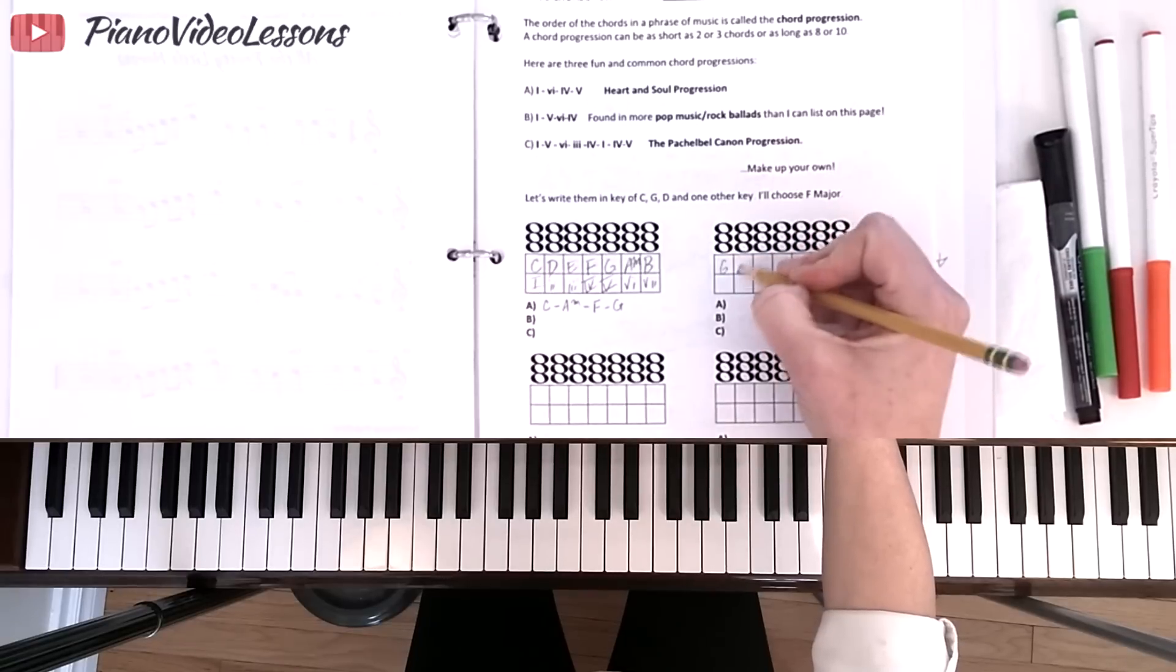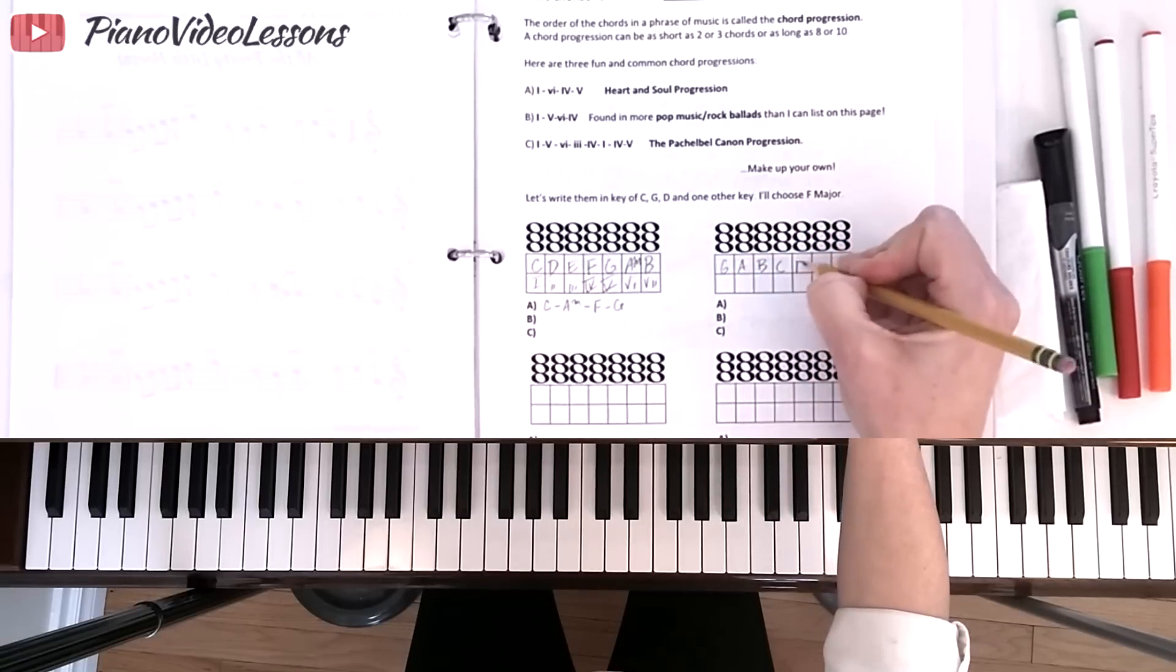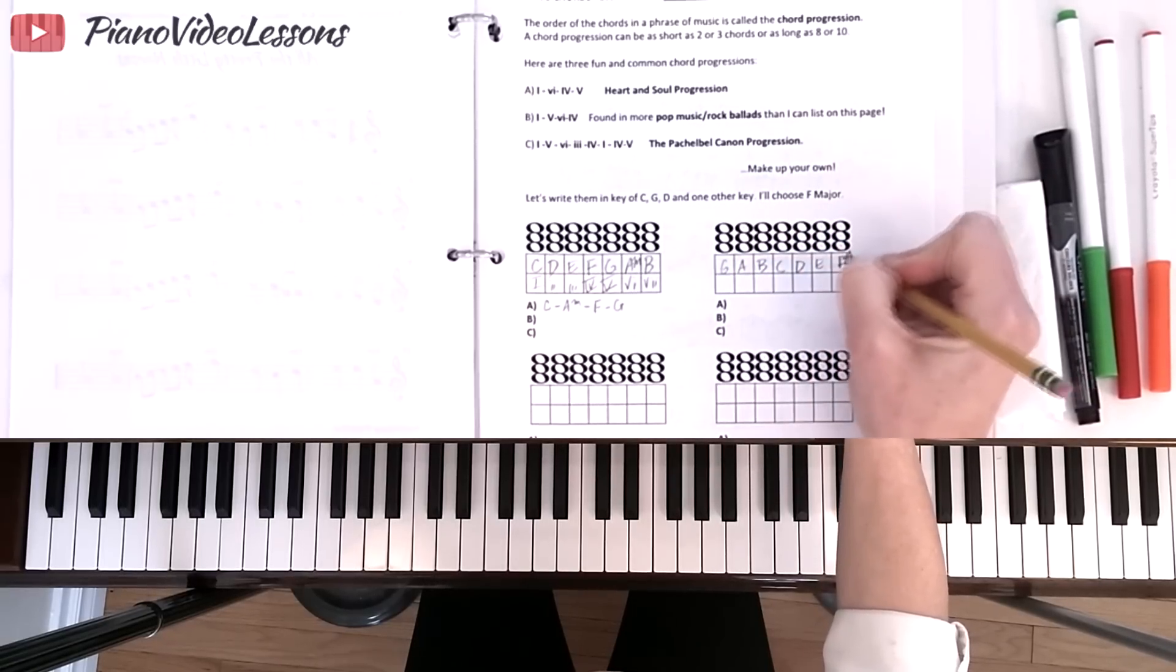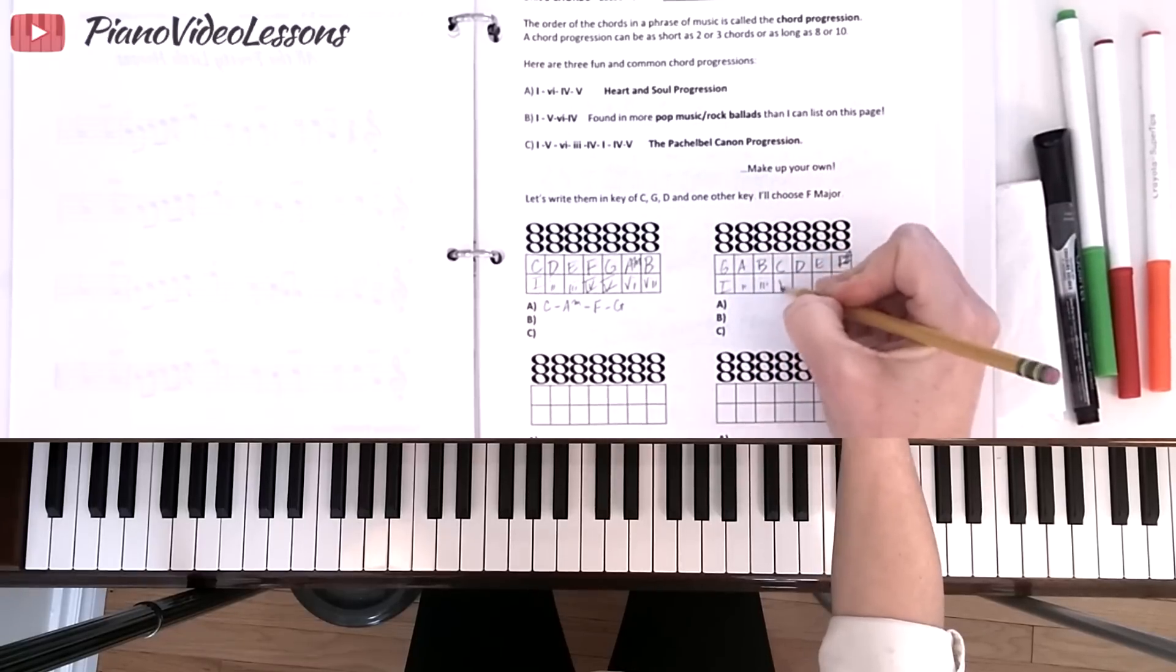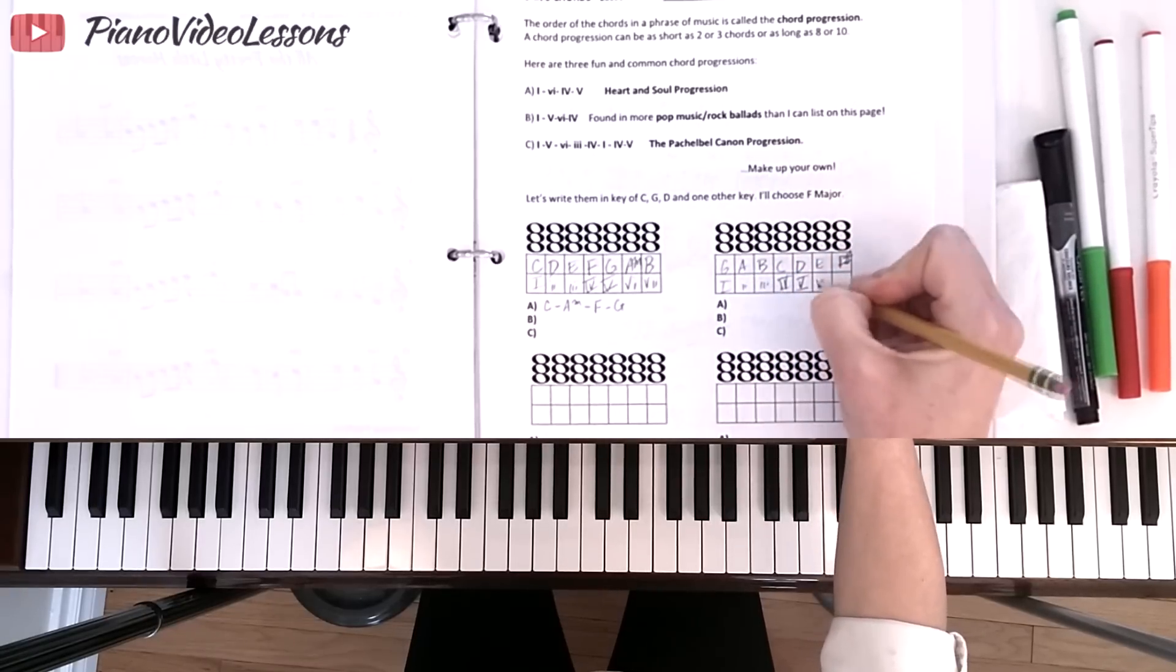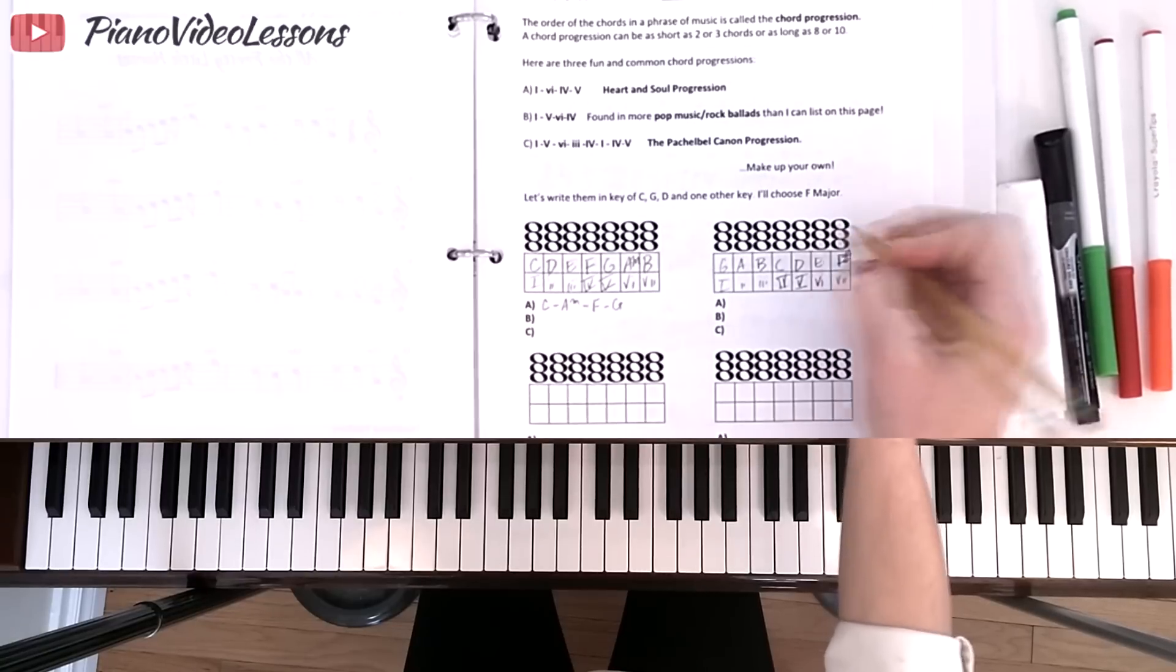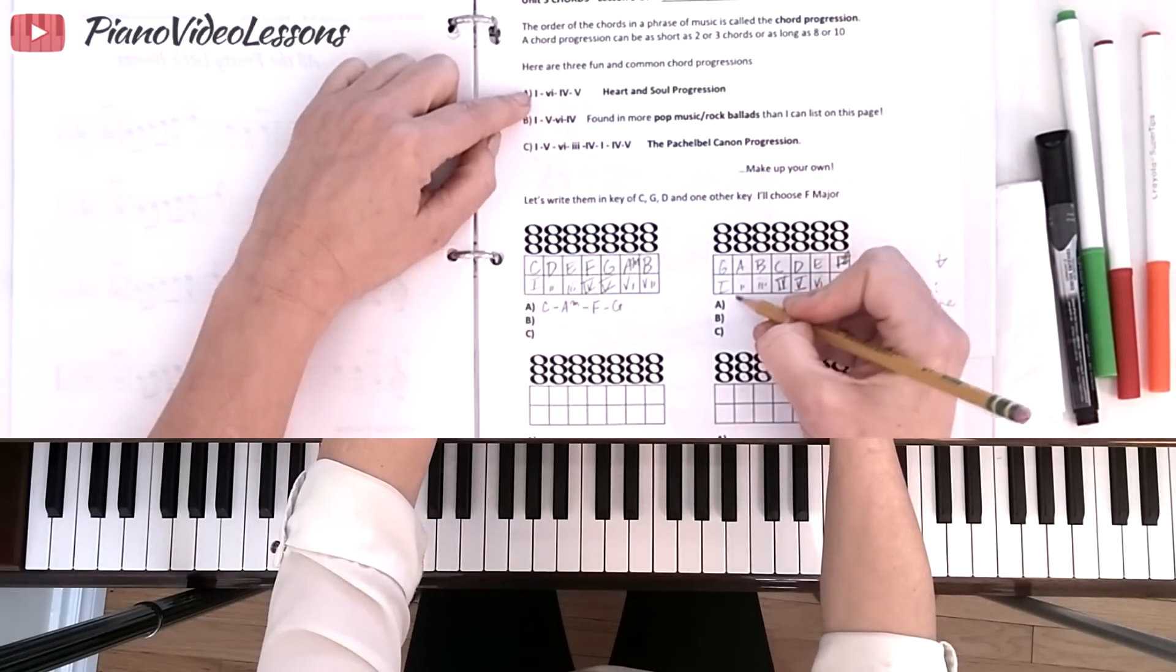Now we can also use another key. We could use the key of G. We could have G, A, B, C, D, E, F sharp for our key of G. And so we're going to have 1, 2, 3, 4, 5, 6, and 7.